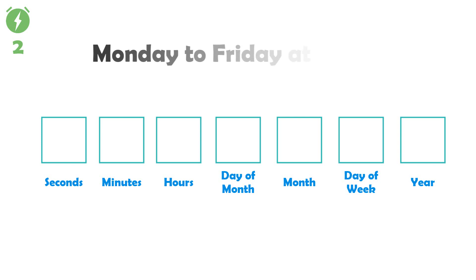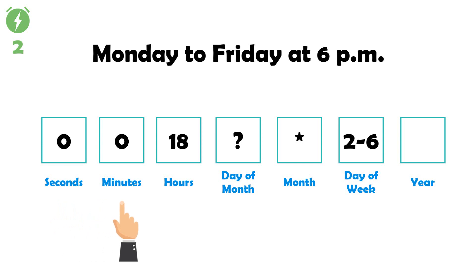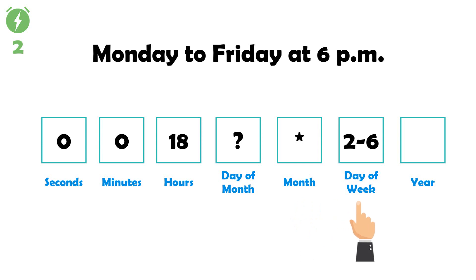Second example: Monday to Friday at 6 p.m. — '0 0 18 ? * 2-6'. Zero in seconds, zero in minutes, eighteen in hours means 6 p.m., question mark in day of month means no specific day of the month, star in month means every month, and '2-6' in day of week means the bot is only started on Mondays through Fridays — number 2 for Monday, number 6 for Friday, and minus to define the range.